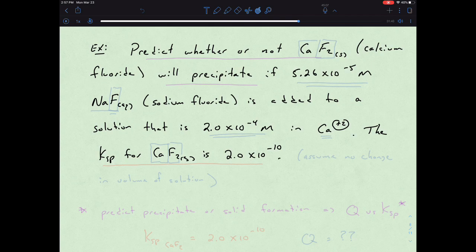Okay, so here is our question. We need to predict whether or not calcium fluoride would precipitate if 5.26 times 10 to the negative 5th molar sodium fluoride is present or added to a solution that is also 2.0 times 10 to the negative 4th molar. The Ksp for calcium fluoride is 2.0 times 10 to the negative 10th. And we want to assume that there is no change in volume of solution for this particular example.